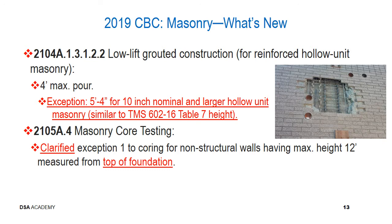Regarding masonry core testing in section 2105A.4, exception one has been clarified so that coring for non-structural walls having a maximum height of 12 feet is measured from the top of the foundation. Previously it said from the base of the wall, which led to some inconsistencies in application. Now it's clarified as being from the top of the foundation of that wall.